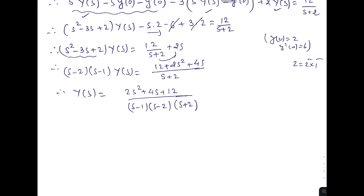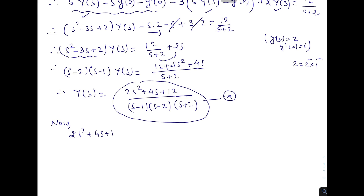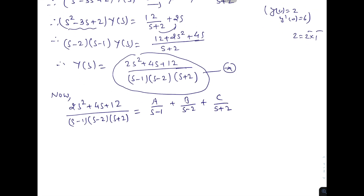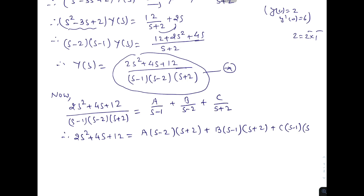To find the inverse Laplace transform, we need partial fractions. We write: (2s² + 4s + 12) / [(s-1)(s-2)(s+2)] = A/(s-1) + B/(s-2) + C/(s+2). Therefore: 2s² + 4s + 12 = A(s-2)(s+2) + B(s-1)(s+2) + C(s-1)(s-2).